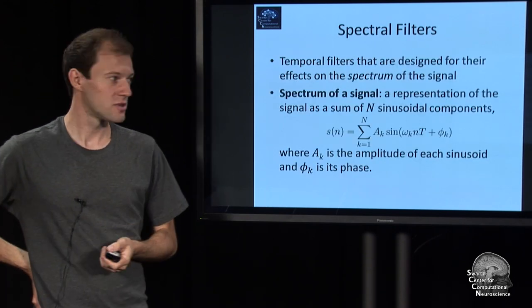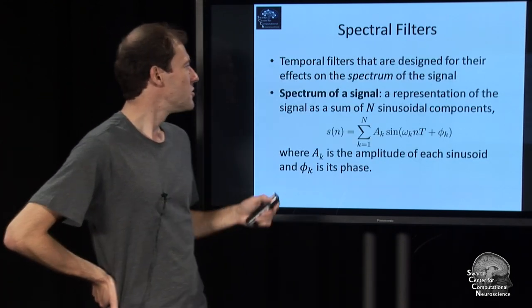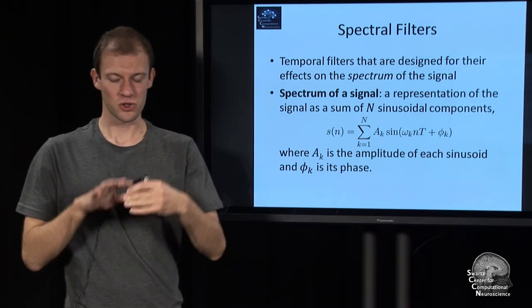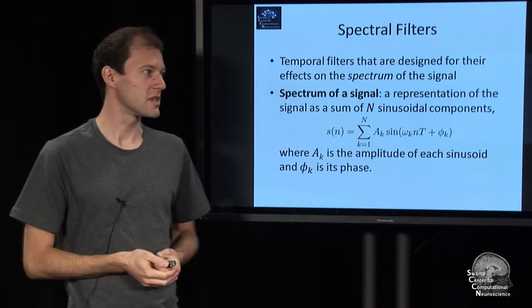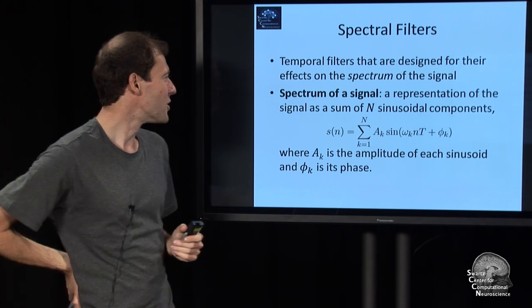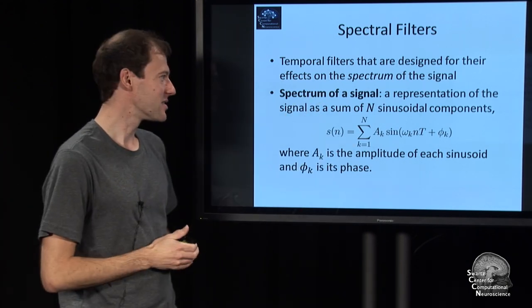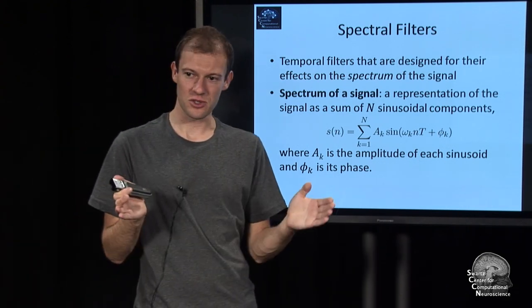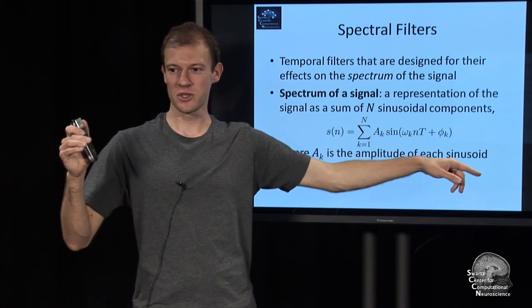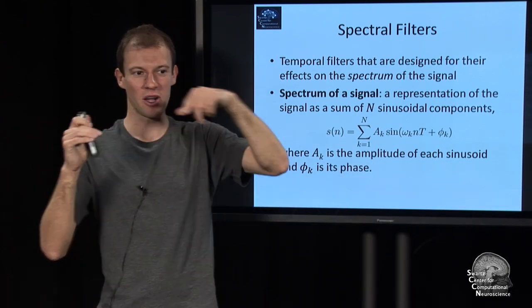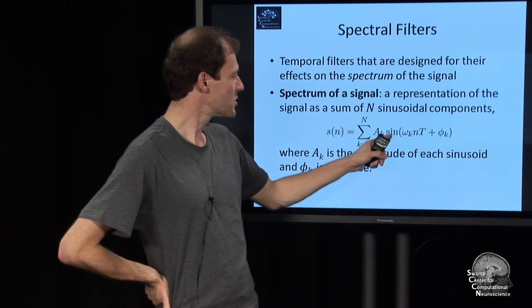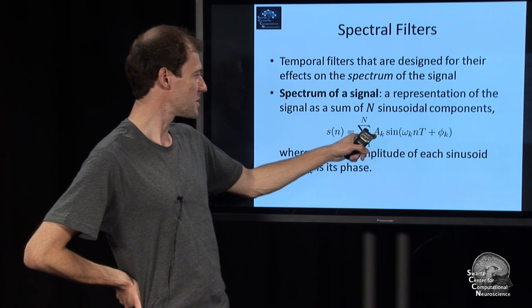And that takes us to spectral filters. They are basically temporal filters that are designed or optimized to have a particular effect on the frequency contents of a signal. So that requires a little bit of a definition. You can define a spectrum of a signal as a way to represent a signal as a sum of n sinusoidal components. You have a low frequency sinusoid, and you have higher frequency, very high frequency, and so on. So your signal is a sum of n components.